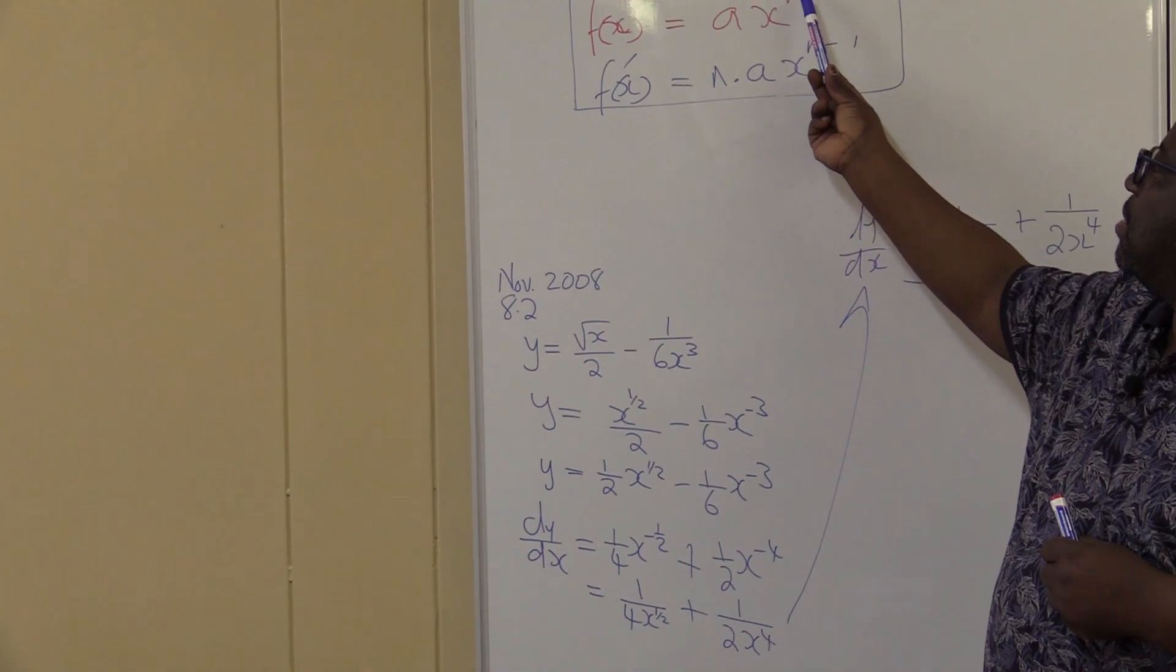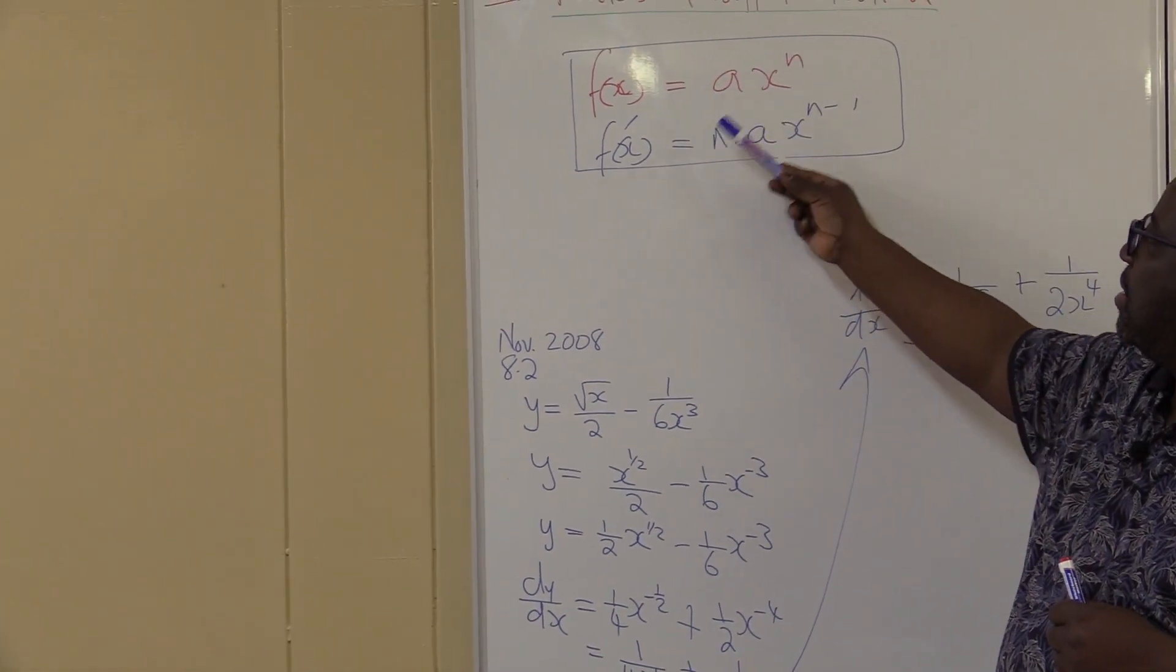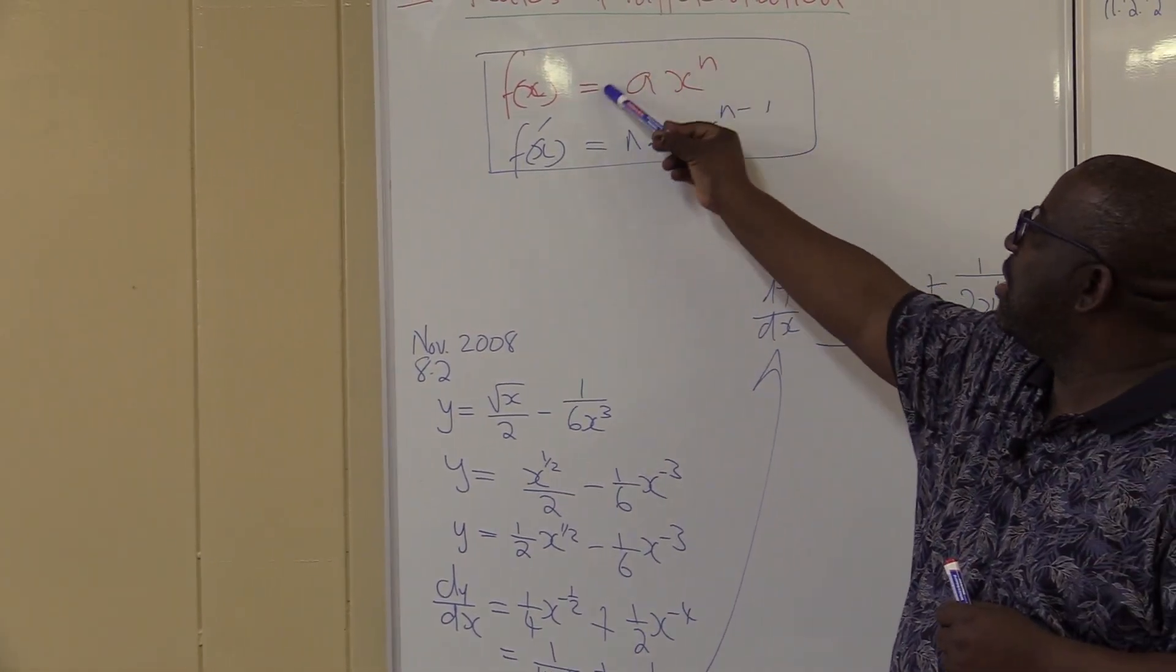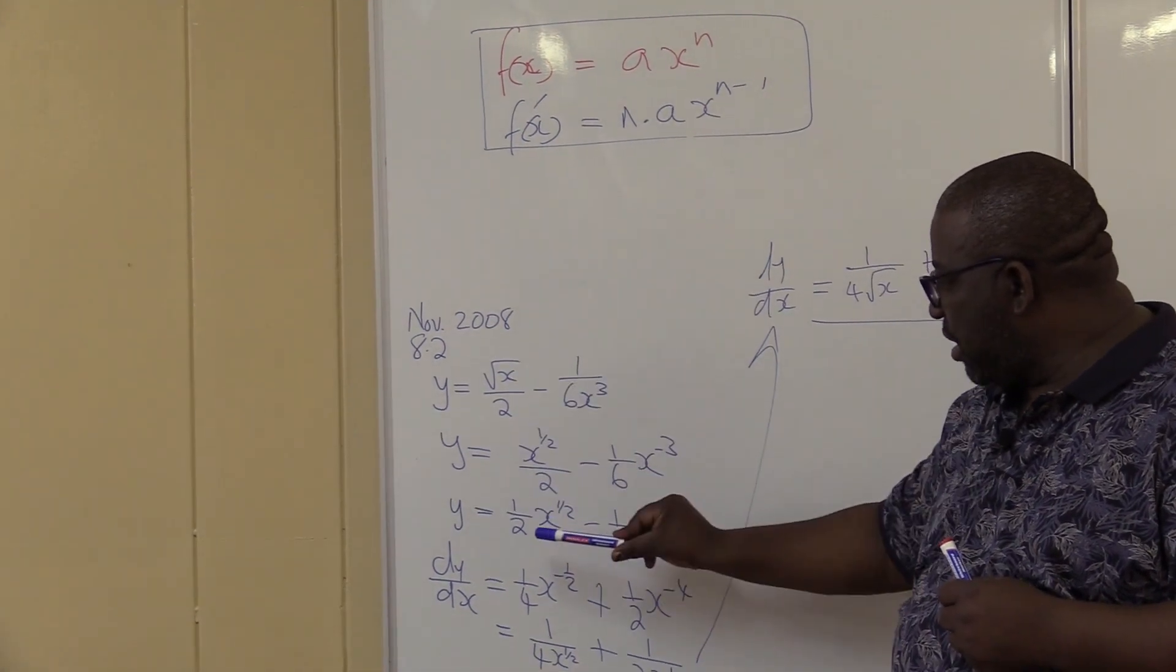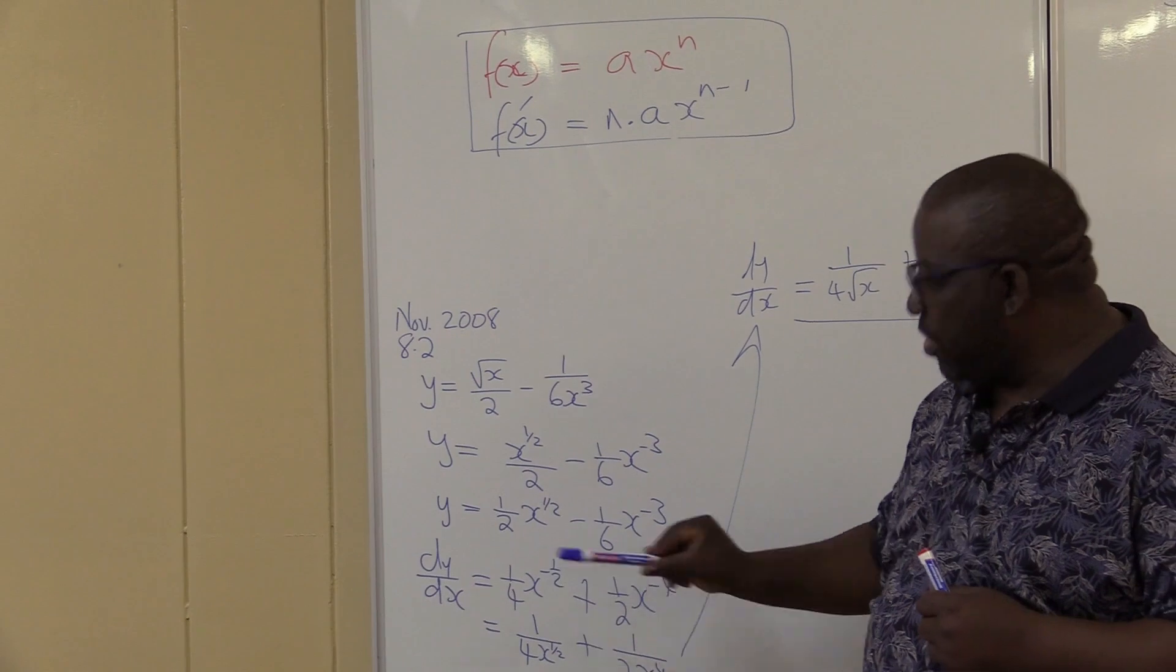This is the key: take n, you multiply this side, then subtract 1. Arrange it, put it in the standard form first. It's not in the standard form, let's put it in the standard form first before we differentiate.